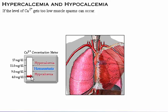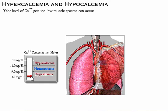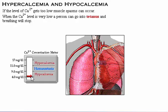If the level of calcium gets too low, muscle spasms can occur. When the calcium level is very low, a person can go into tetanus due to a lack of calcium available to trigger release of neurotransmitter at the neuromuscular junction. If the calcium level goes too low, breathing will stop. It is very important to maintain calcium levels within a specific range.